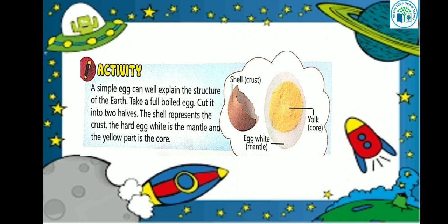A simple egg can explain the structure of the earth. Take a fully boiled egg and cut it into two halves. The shell represents the crust, the hard egg white is the mantle, and the yellowish portion in the middle is the core. So the first layer is the crust on which we live, the second is the mantle with thick layers of rock, and the third is the core — with inner core and outer core — containing solid and liquid metal.